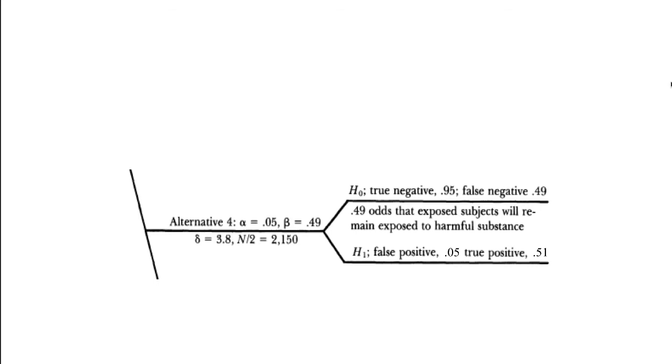Here's another alternative. Where do we have to set beta to get the relative risk down below 4? It turns out we'd have to set beta at 0.49. That means that the odds that exposed subjects will remain exposed to harmful substance are 49%. If we set beta at 0.49, we have a chance of false negative about half the time. So this is going to allow chemicals to slip through that are actually dangerous. This one's totally unacceptable.